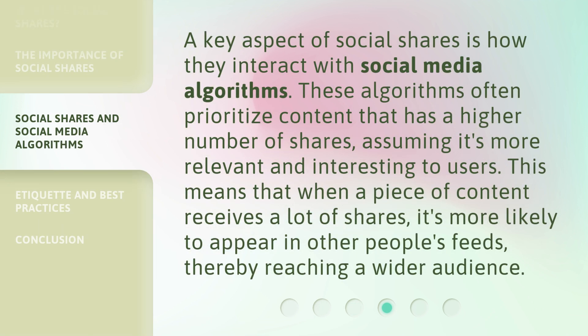A key aspect of social shares is how they interact with social media algorithms. These algorithms often prioritize content that has a higher number of shares, assuming it's more relevant and interesting to users. This means that when a piece of content receives a lot of shares, it's more likely to appear in other people's feeds, thereby reaching a wider audience.